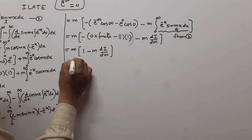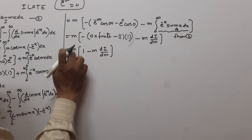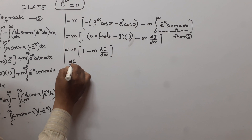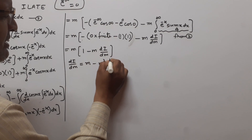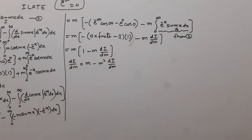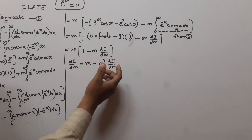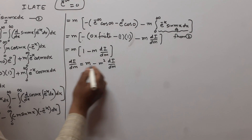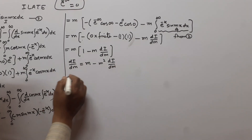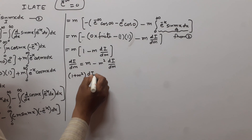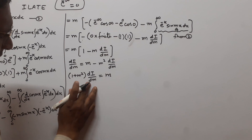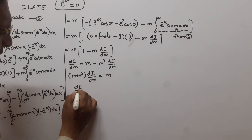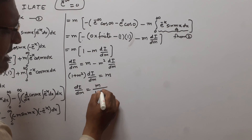Now we multiply out. On the left-hand side we have dI/dm, and on the right-hand side, m minus m²·(dI/dm). Bringing the dI/dm term to the left and taking it common, we get (1 + m²)·dI/dm = m. So dI/dm = m / (1 + m²).